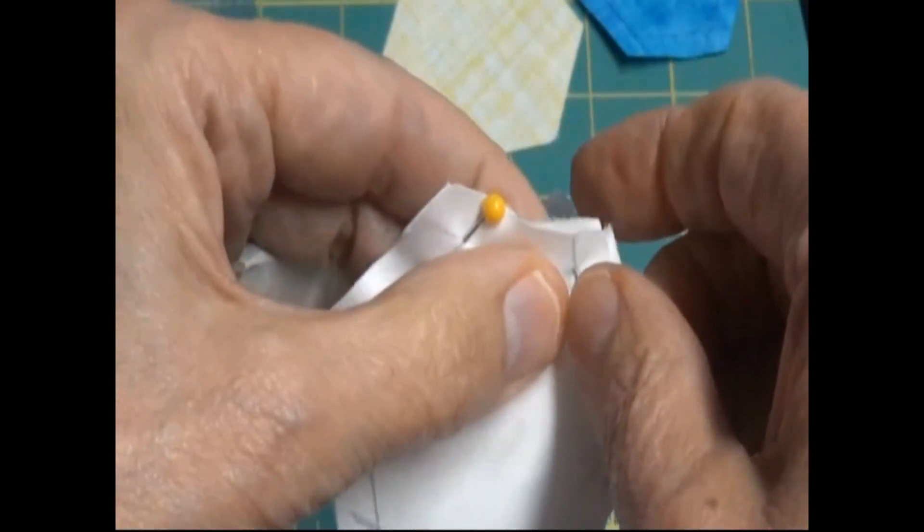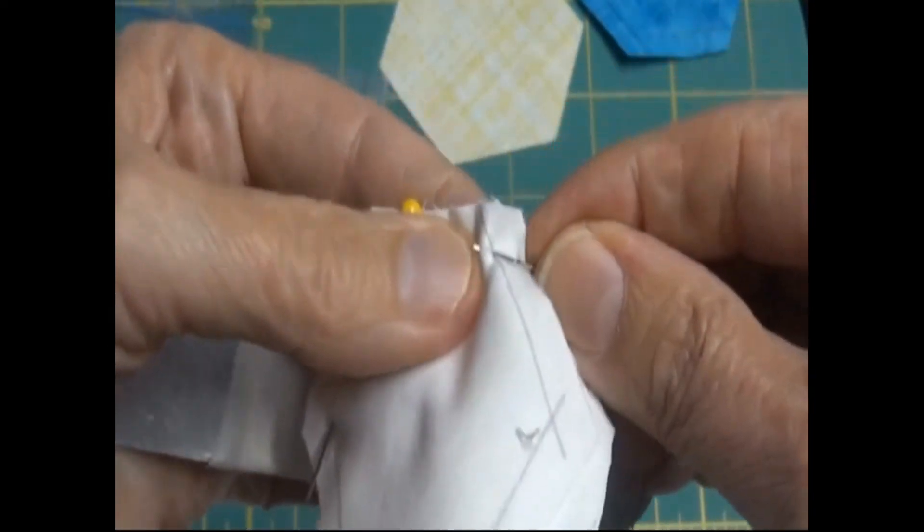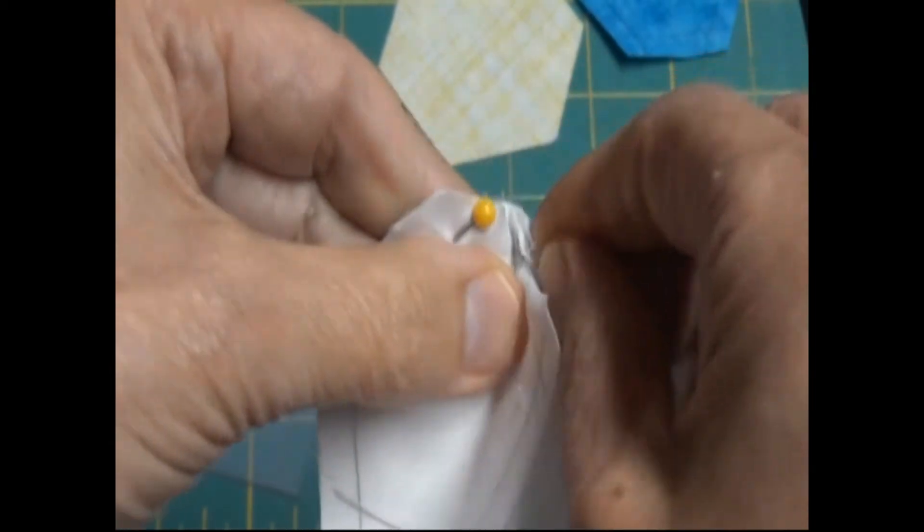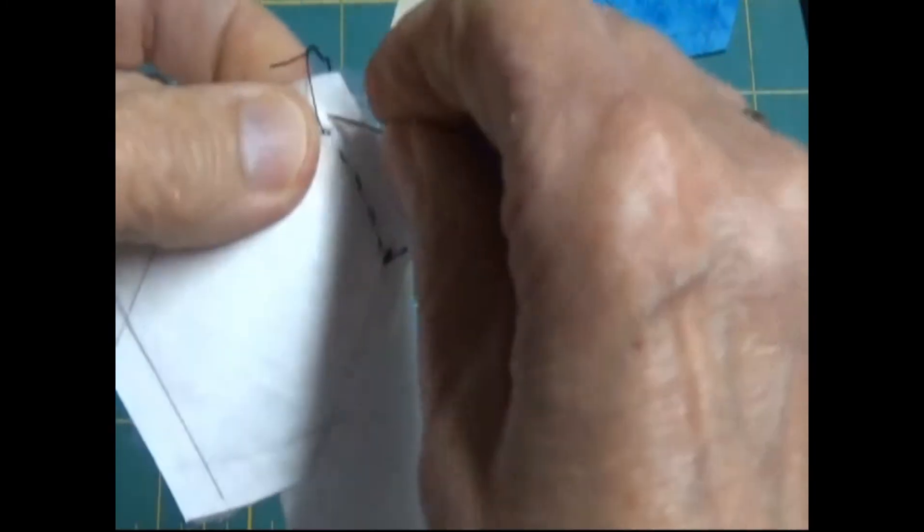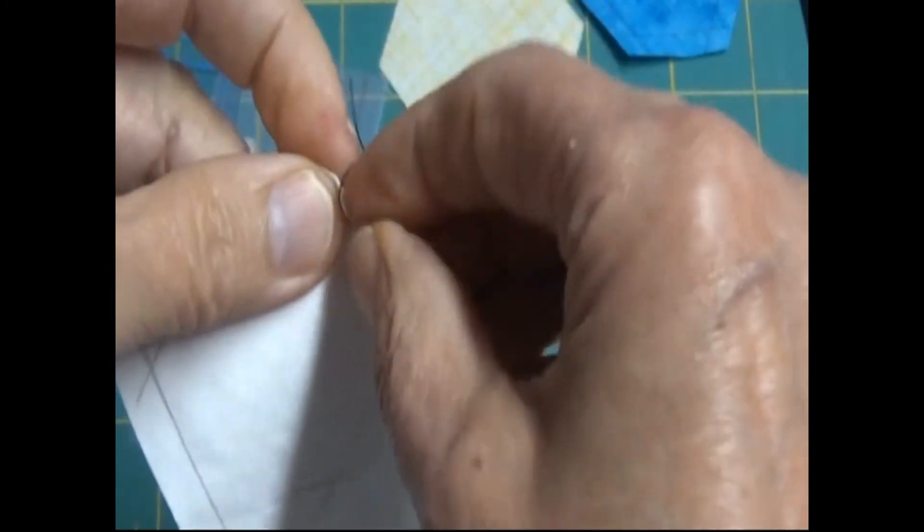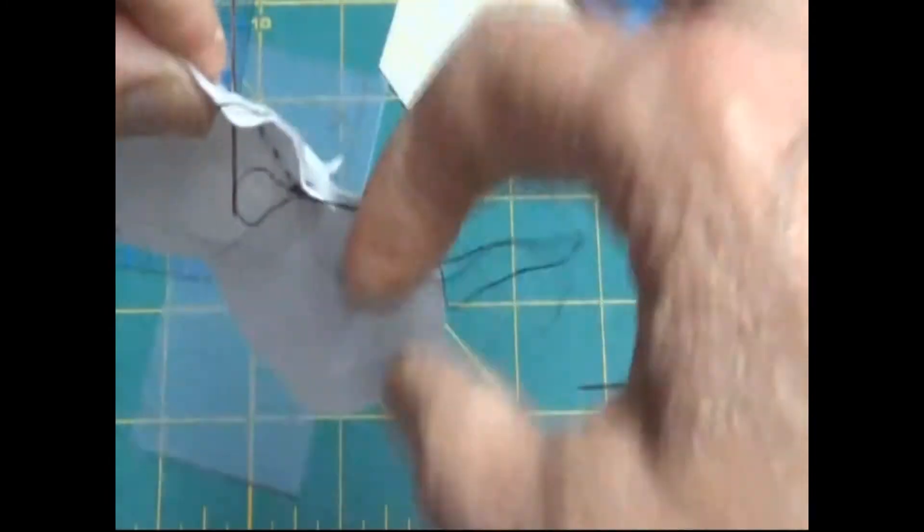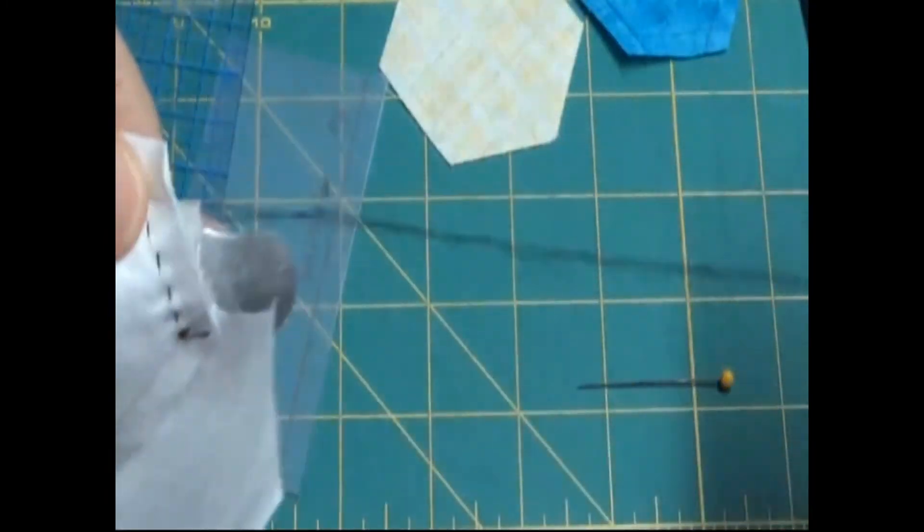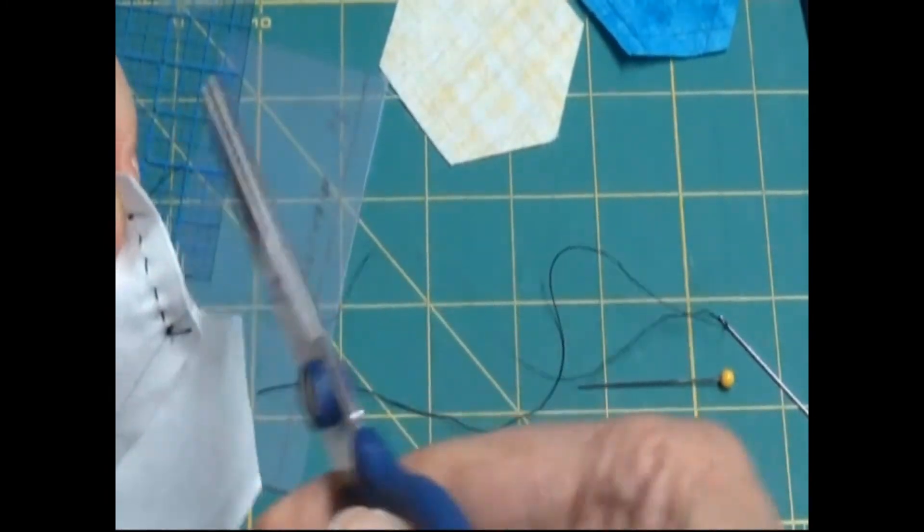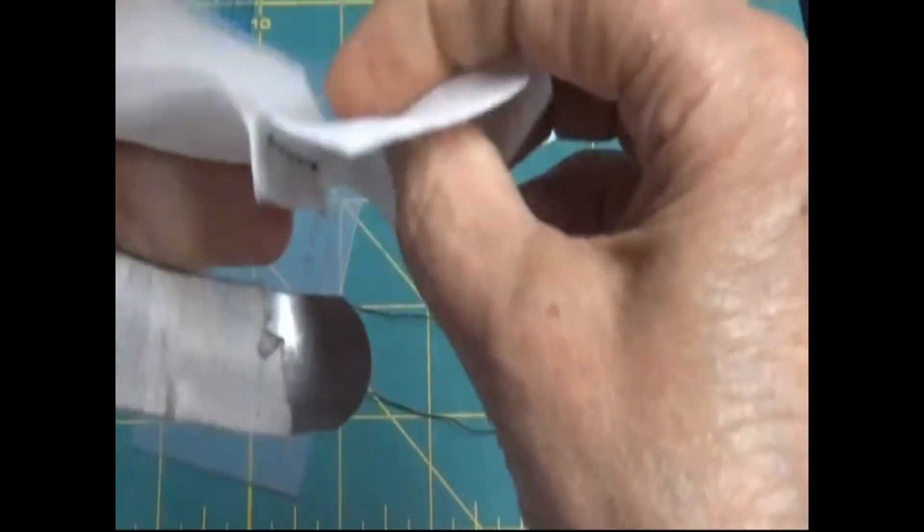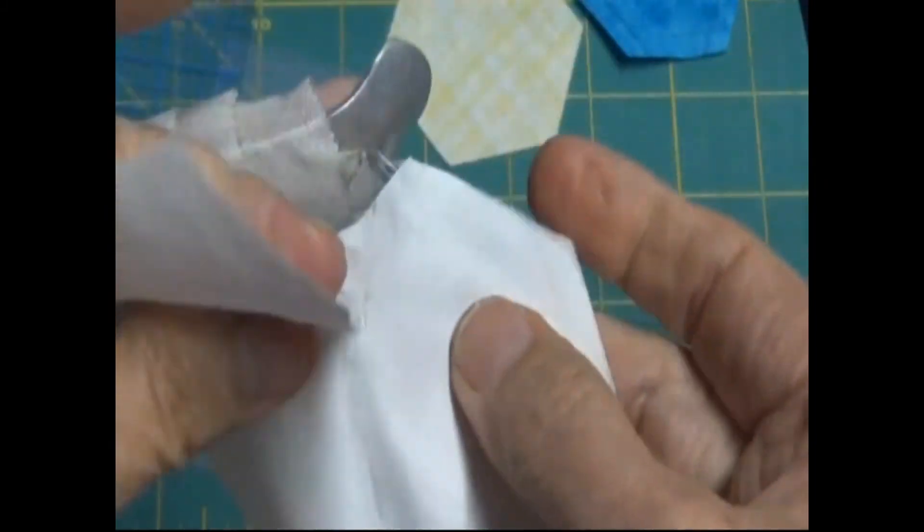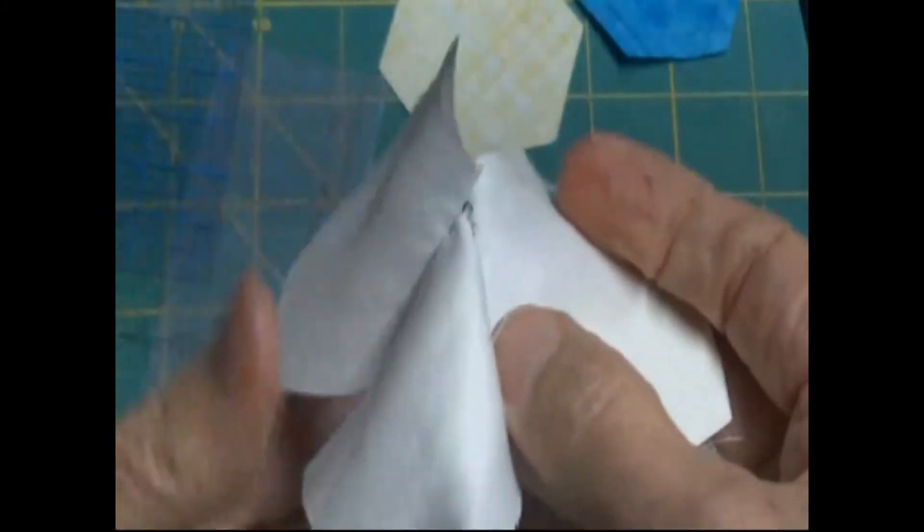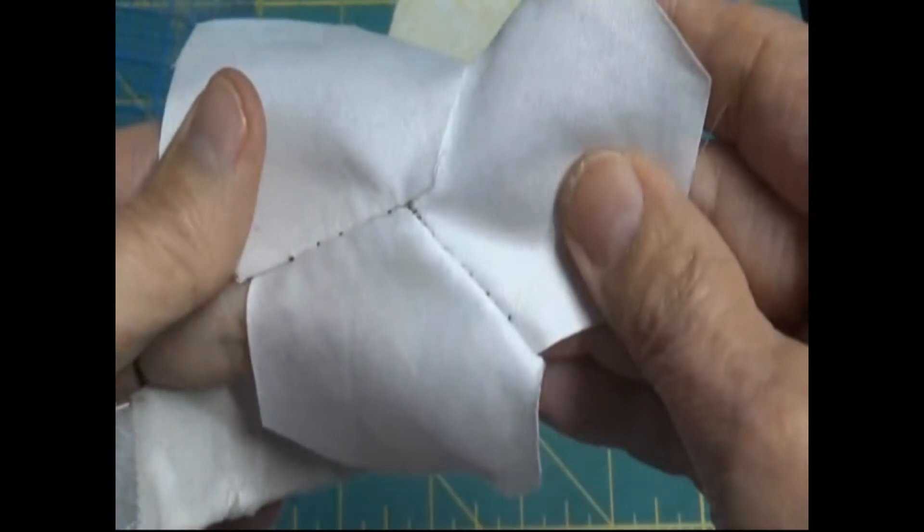It's going to come through. And then we're going to do our small quilting stitches down this side. A couple of stitches there to make my knot. And then I'm going to cut it.